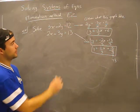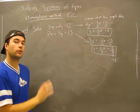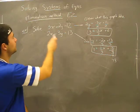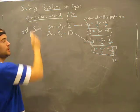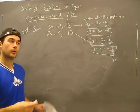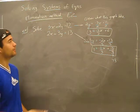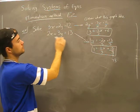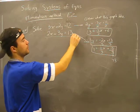All right, another example here. Don't get worried about all the writing — we'll go through it from the top. Elimination method. Easy. We're getting rid of stuff. Solve. Here's a set of equations.